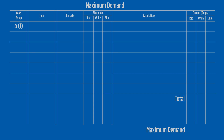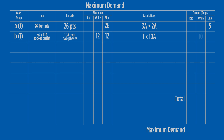Load group A1 has 26 points, with the calculation allocating 5 amps to the blue phase. Looking at load group B1, there are 24 points that are split over the white and blue phases. The calculation allows 10 amps in each of the two phases.